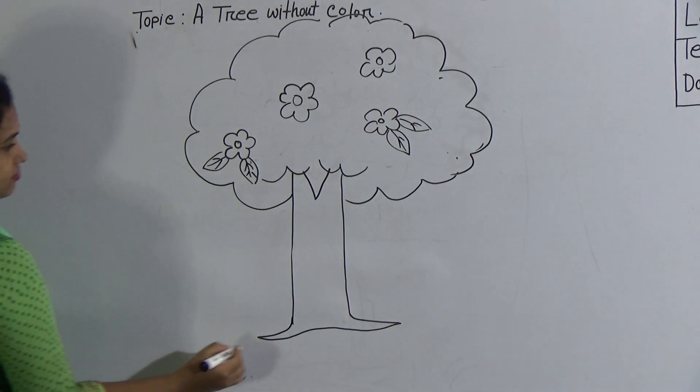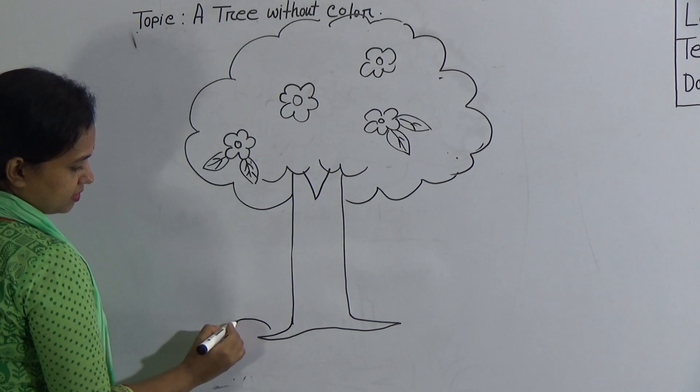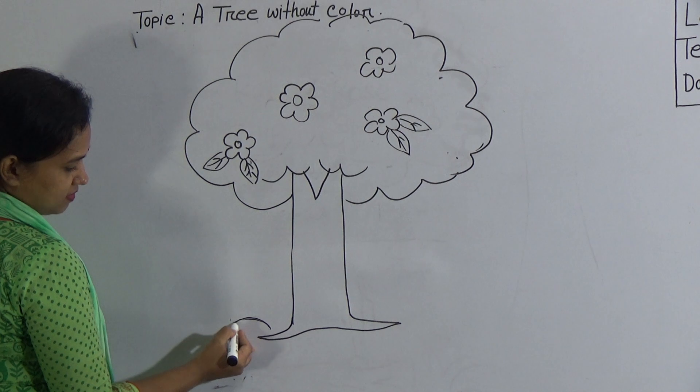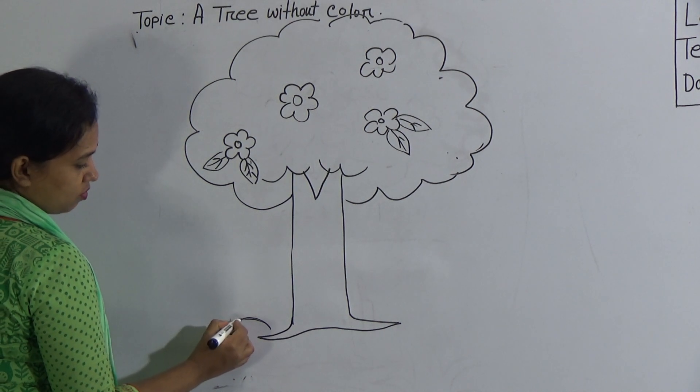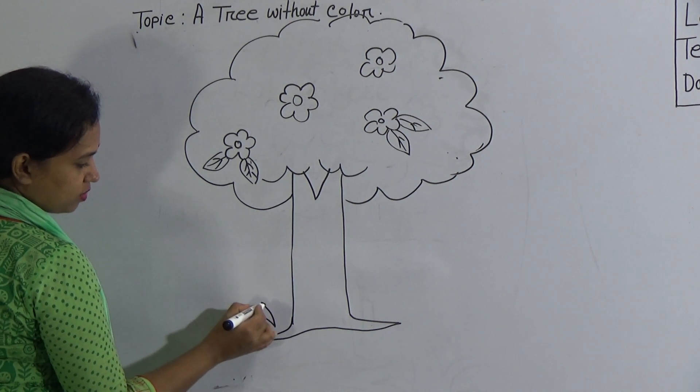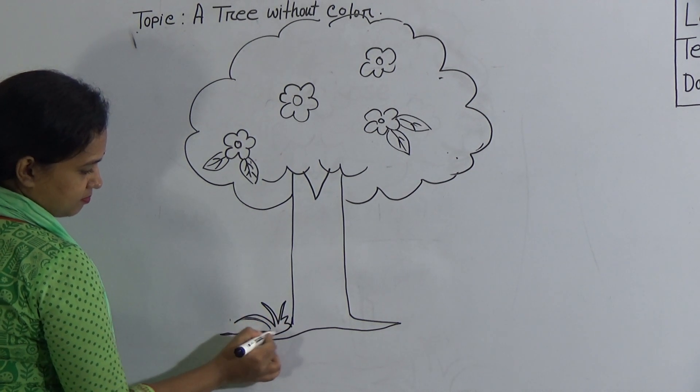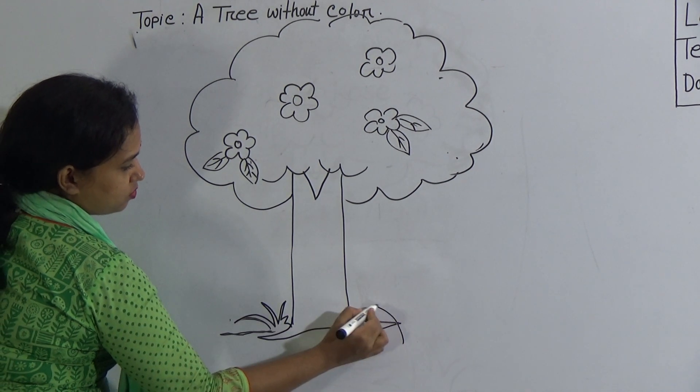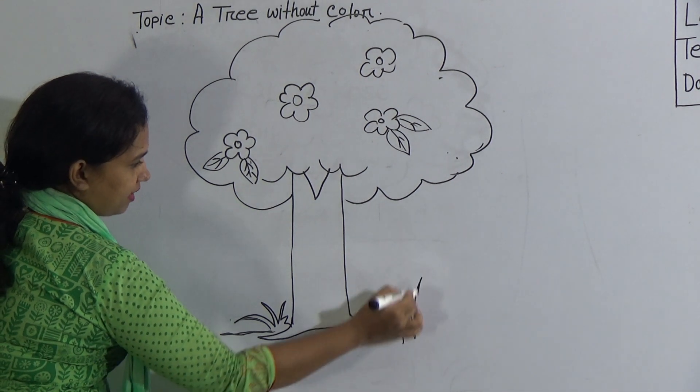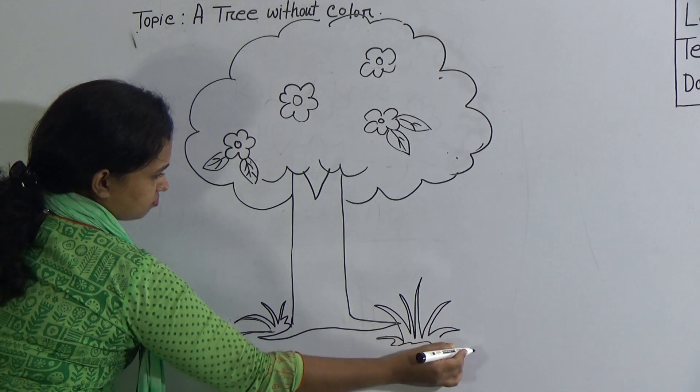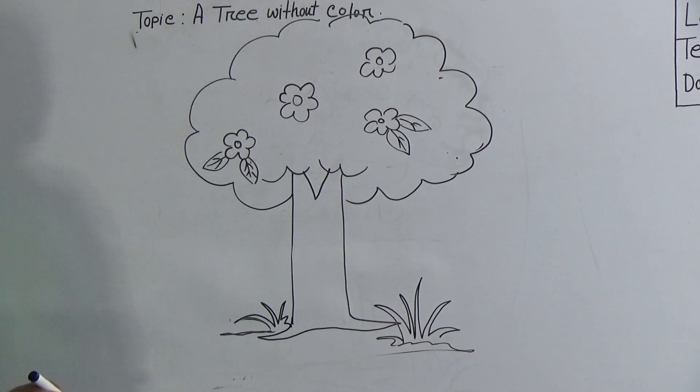Just join this. And if you want, you can give here some grass like this curve line. First, you will draw this curve line like this. Go and back. Go and back. And give this type of line. Again, go and back. Look at my hand. How I will go and back. You also do this.